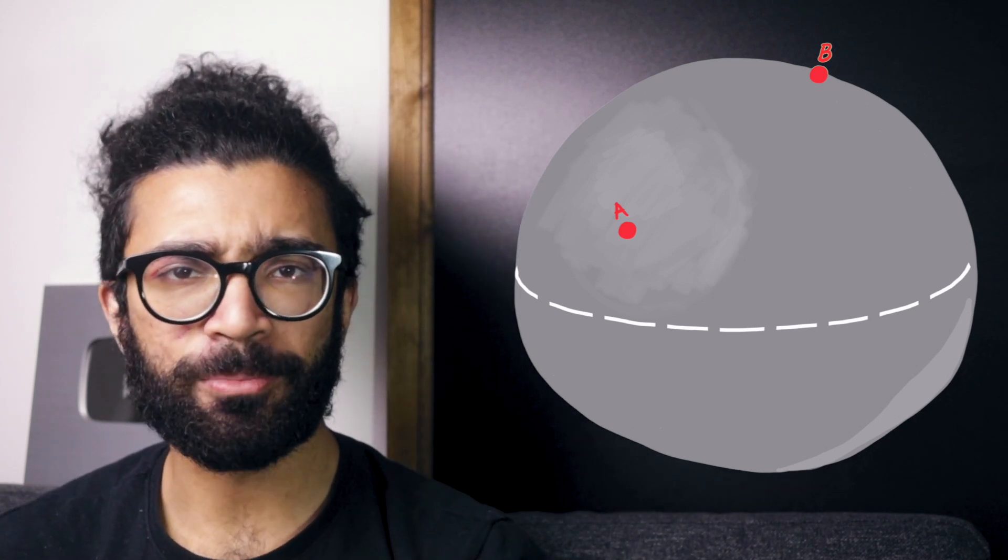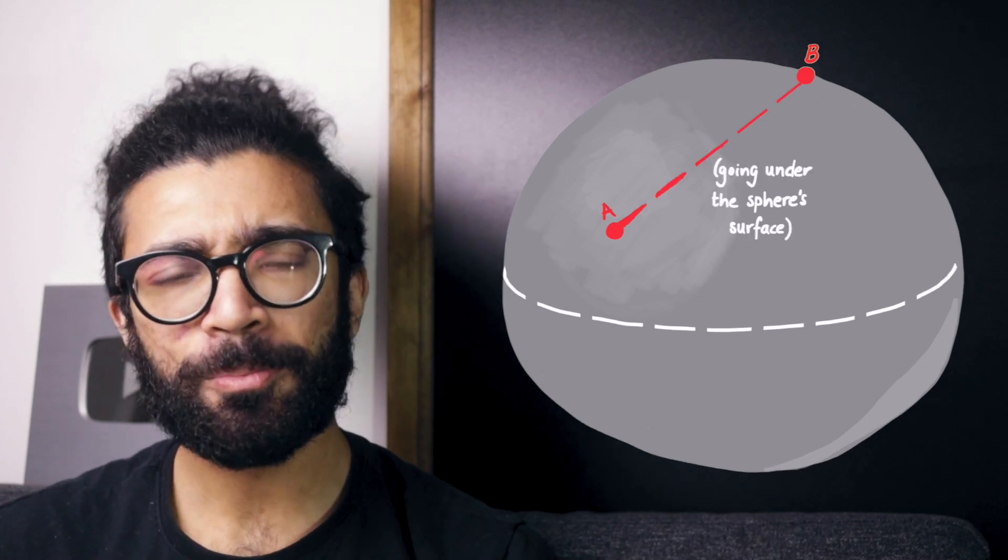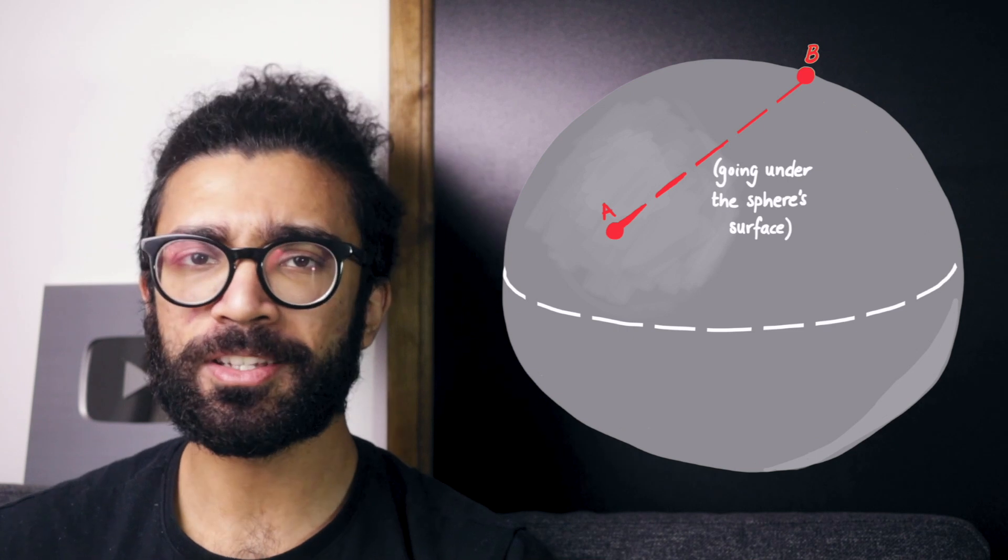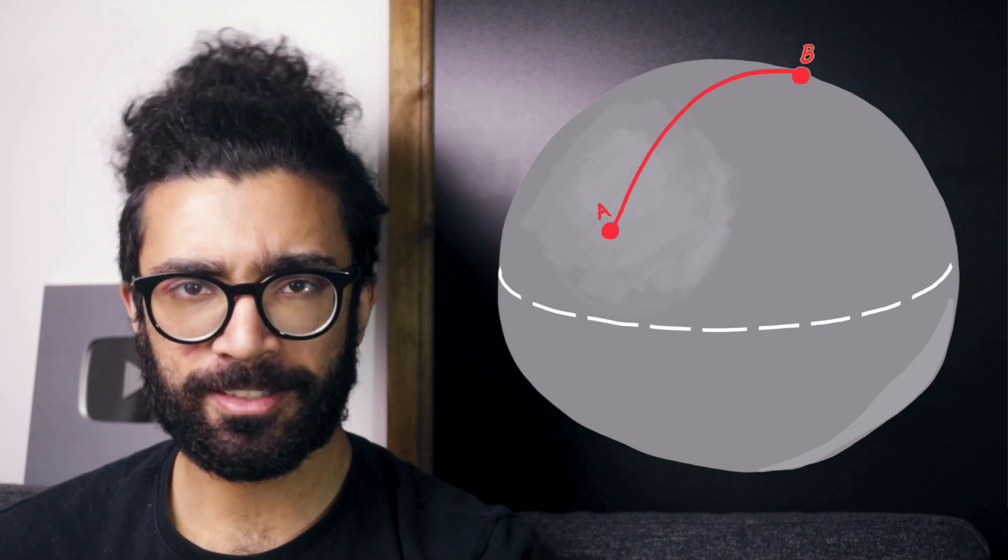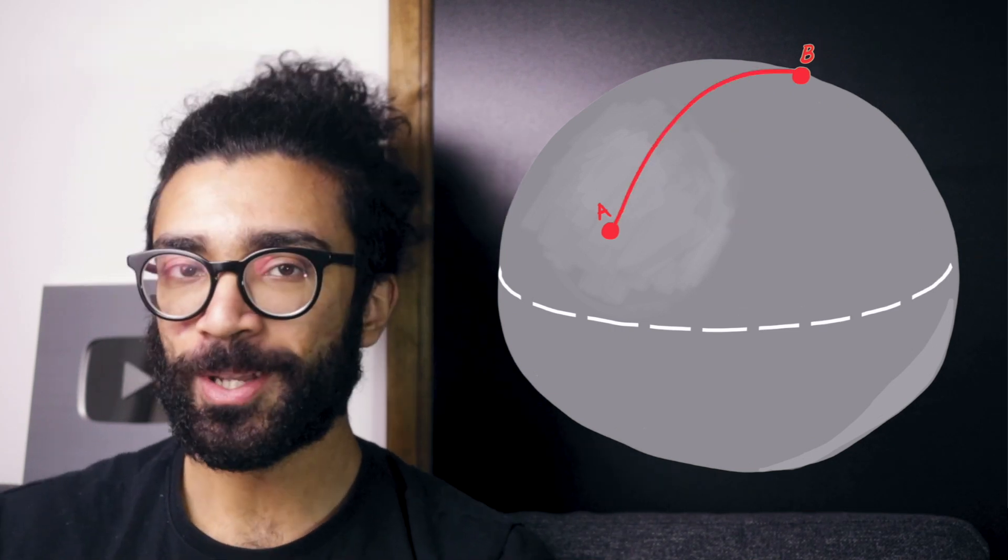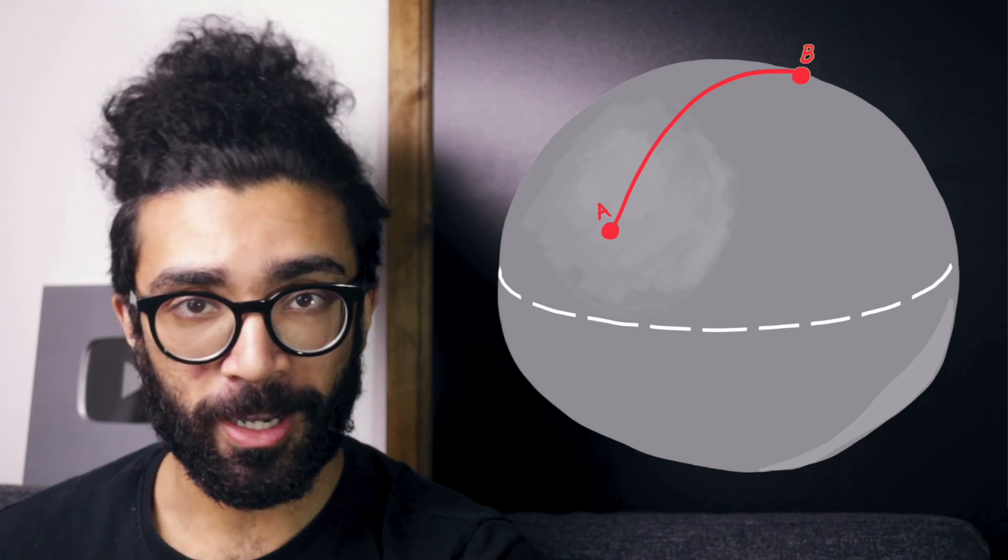In this scenario we can say, well the shortest distance between A and B is still a straight line, but because we're restricted to moving along the surface of the sphere, this is the shortest path we can take. As we can see this is no longer a straight line, it's a curved path.